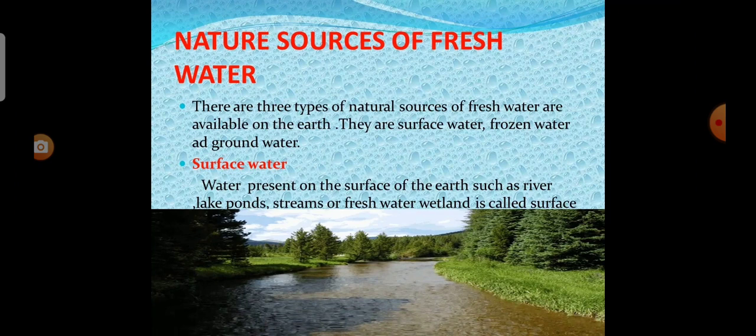The next topic is natural sources of fresh water. There are three types of natural sources of fresh water available on earth: surface water, frozen water, and ground water. Now we will see the first one, surface water. Water present on the surface of the earth such as river, lake, ponds, streams, or fresh water wetlands is called surface water.